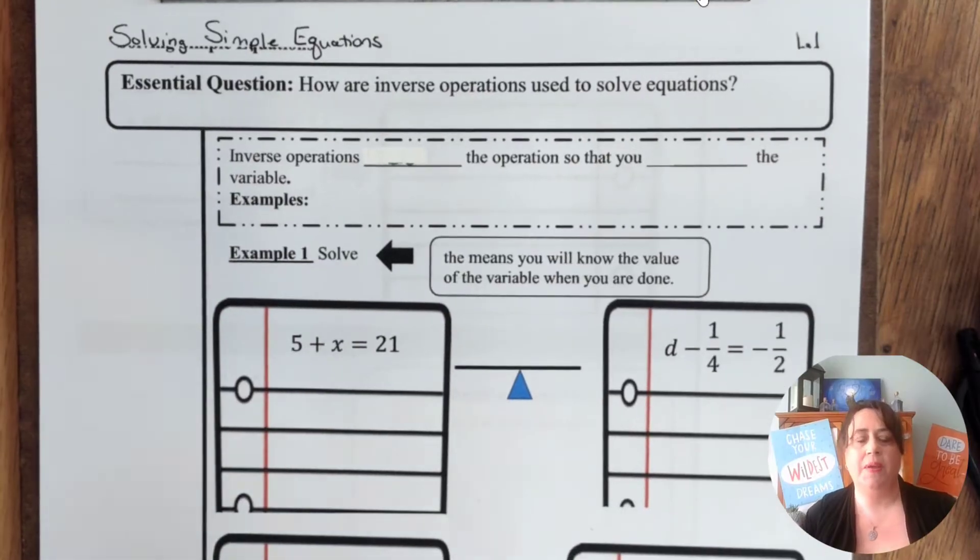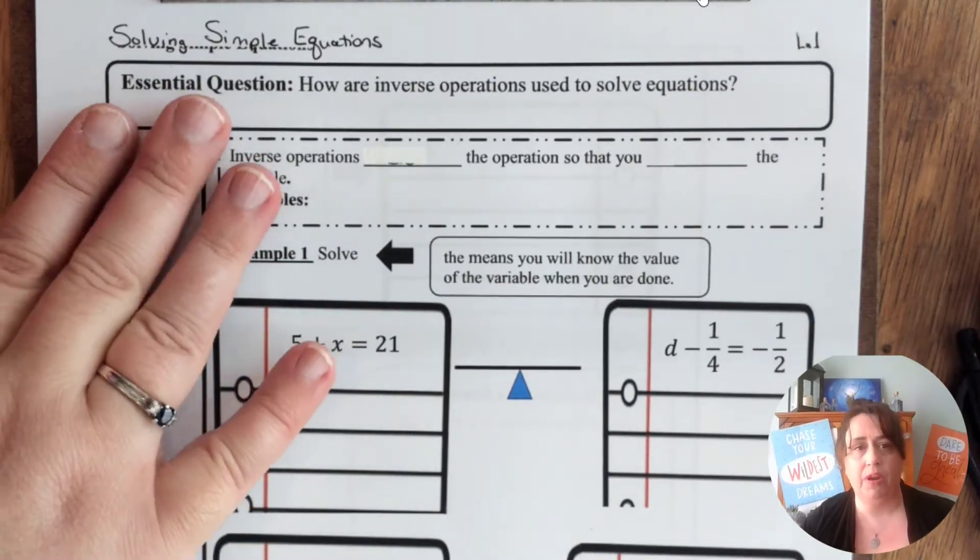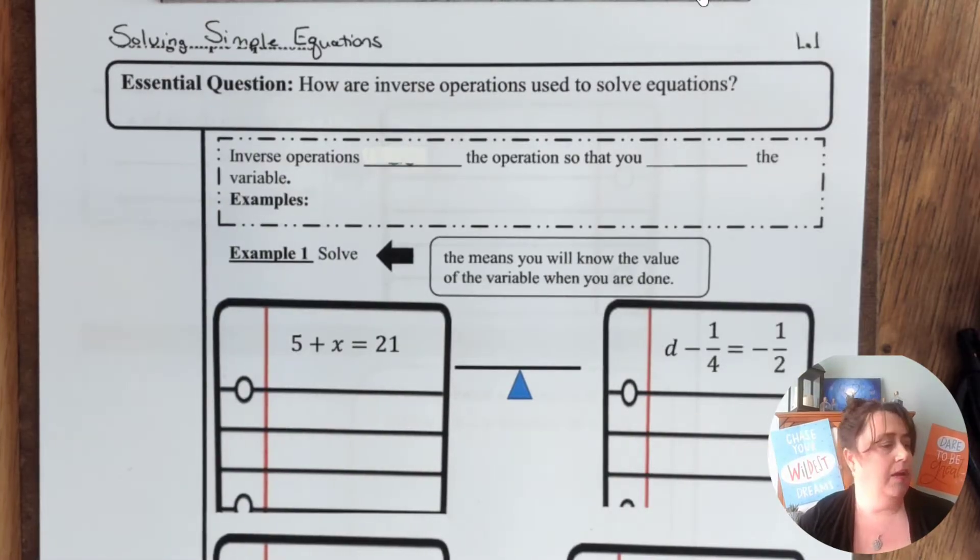All right, so your Jaguar Jots page should look something like this, solving simple equations with the essential question at the top. Remember our essential question drives what it is that we are trying to do for the day and by the time we're done with this lesson you should be able to solve or write a summary for that question. All right, let's get started.